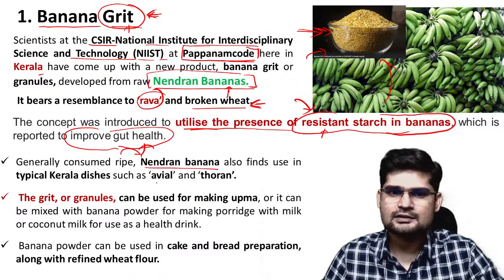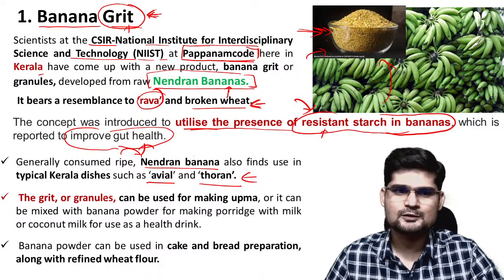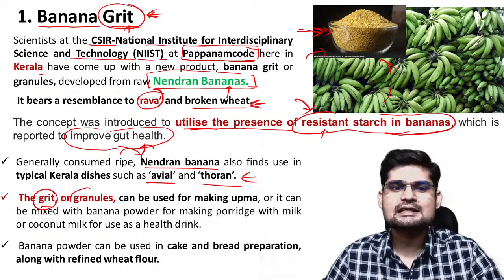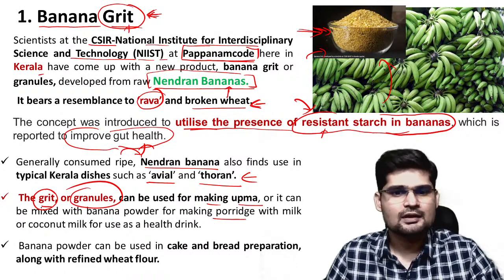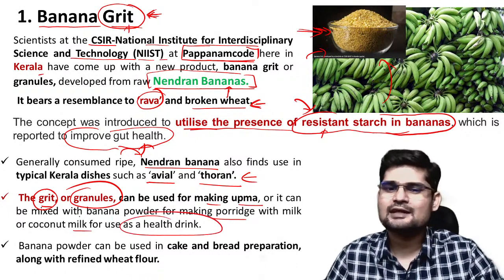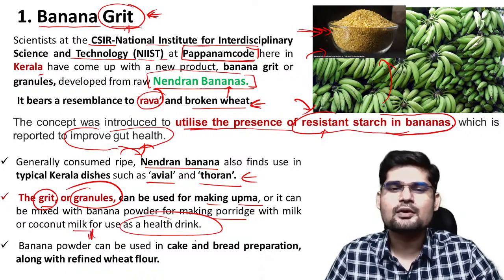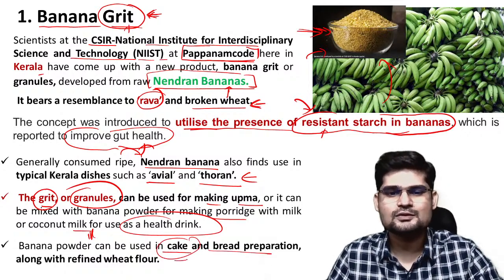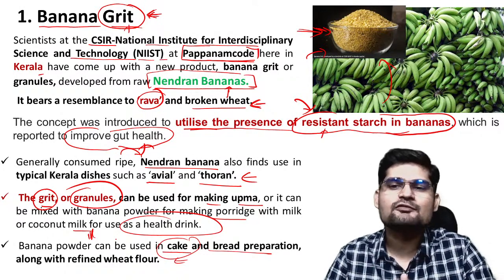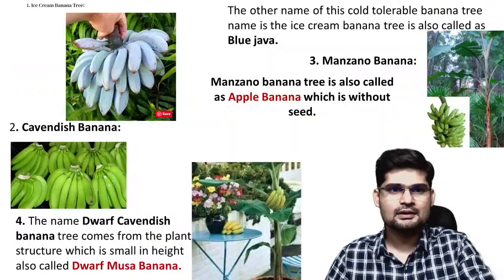This banana is consumed in its ripe variety and also in dishes like avial and thoran in Kerala. The grit or granules can be used for making upma, mixed with various powders and porridges, and healthy drinks like coconut milk drinks can be made from it. Banana grit is also important for baking — cake making and bread preparation. That's the product called banana grit which was in the news.